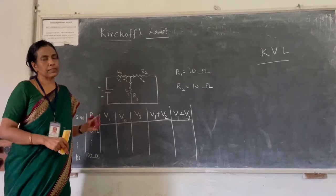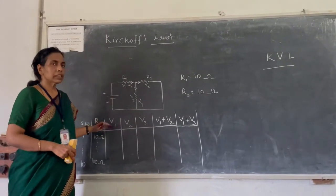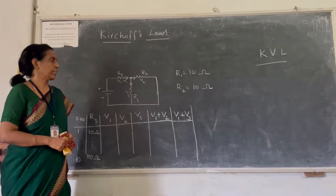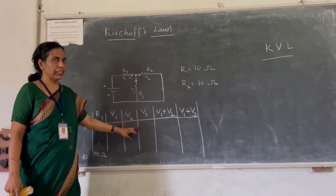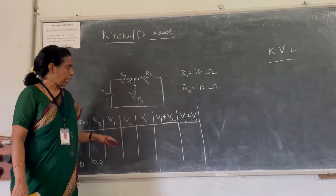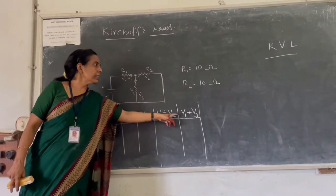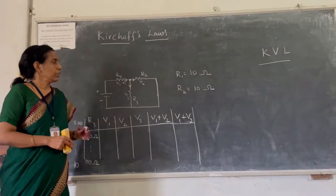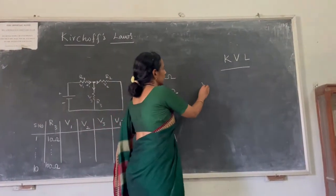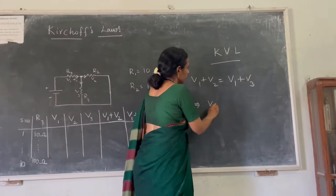Now we move to Kirchhoff's second law, which is KVL — Kirchhoff's voltage law. Using the same observations of V1, V2, and V3, we can also prove the voltage law. We place the same measurements into the second table and add V1 plus V2 in one column and V1 plus V3 in another column. We observe that V1 plus V2 equals V1 plus V3, which implies V2 equals V3.